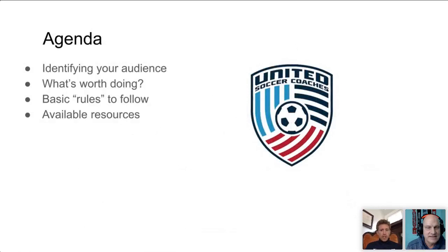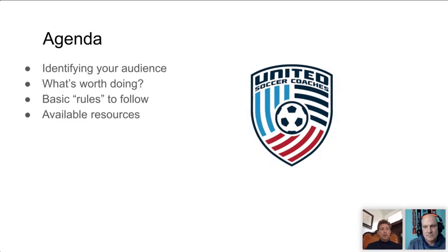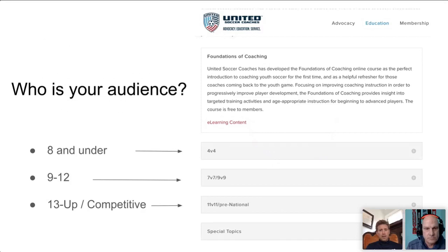Here's our agenda. First, we're going to look at how to identify your audience. Decide what's worth doing after looking at your audience. Basic rules to follow. And then I've got a few resources that might be helpful. To align with United Soccer Coaches, we have the eight and under group, the nine to twelve, and the thirteen and up competitive. You can find how they categorize the 4v4, 7v7, 9v9, 11, and 311 on the United Soccer Coaches website.